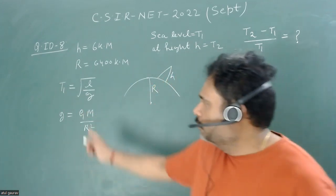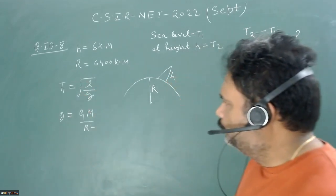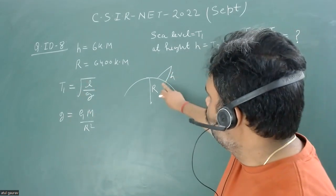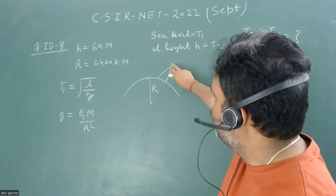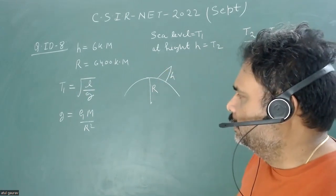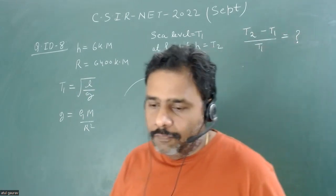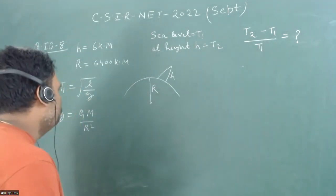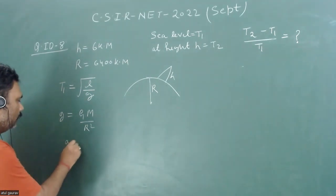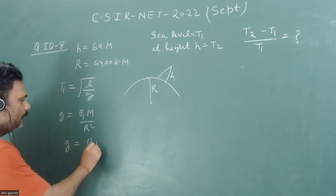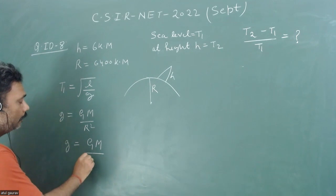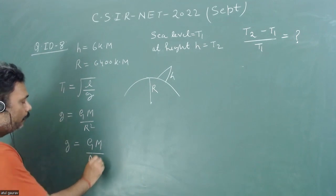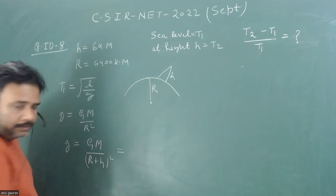We can easily calculate t1, but when we take the pendulum at some height h, then obviously the value of g is going to change. So how does this g change? The value of g will change as GM upon (r+h) whole square, and we can write this as GM upon r square times 1 upon (1+h/r) whole square.